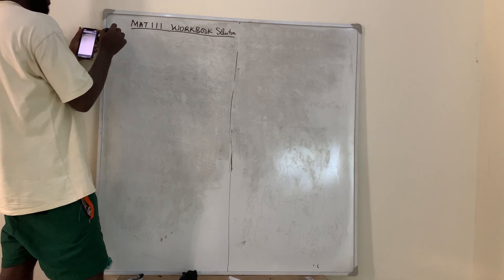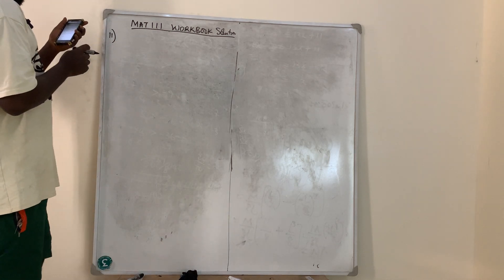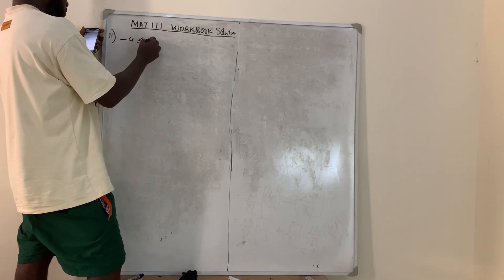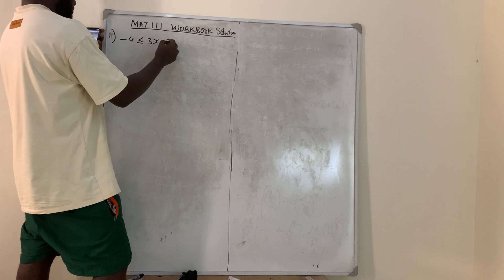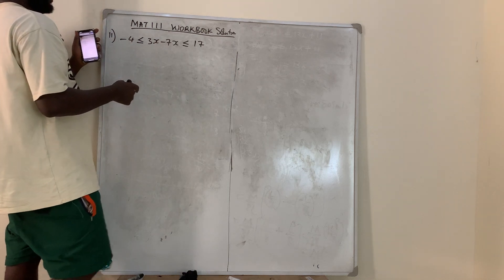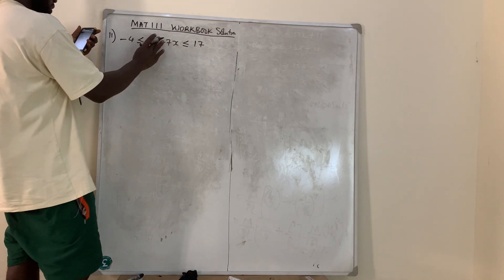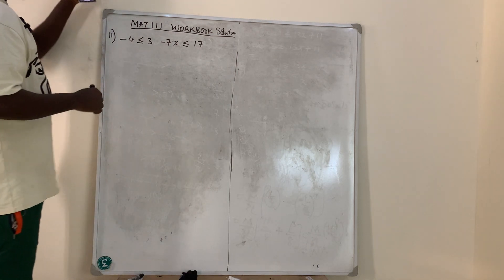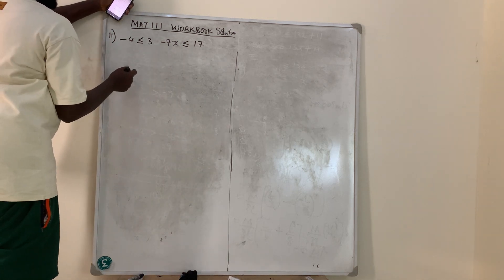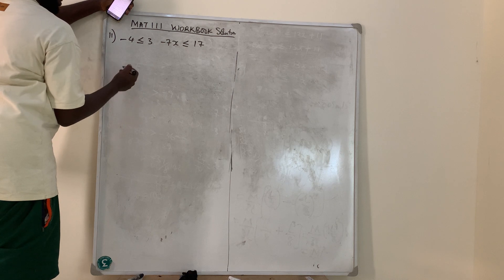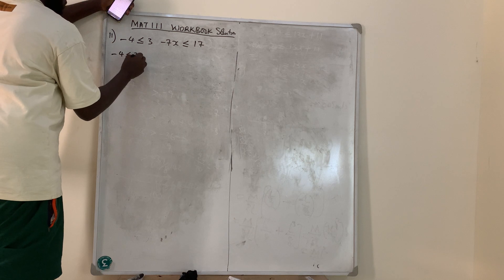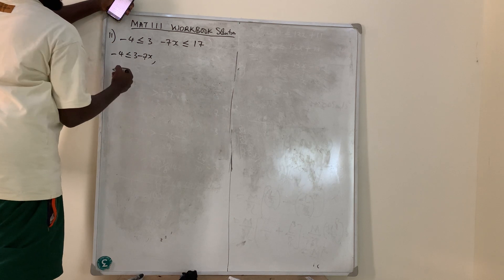So question number 11 on Math 111. The question says: -4 is less than or equal to 3 - 7x, which is less than or equal to 17. You can decide to separate it, or solve straight. If you want to separate it, you'll have: -4 ≤ 3 - 7x, and 3 - 7x ≤ 17.